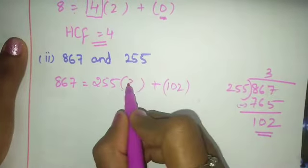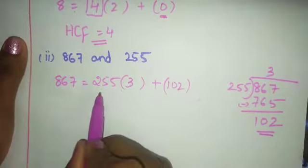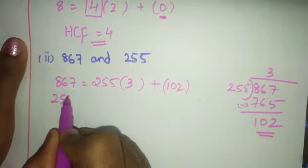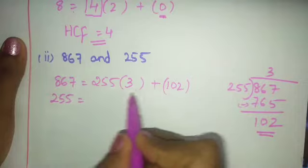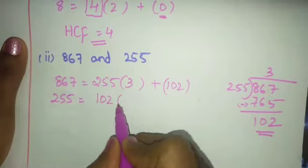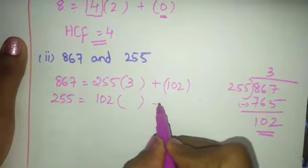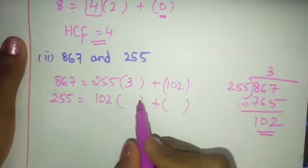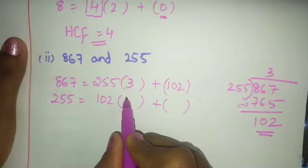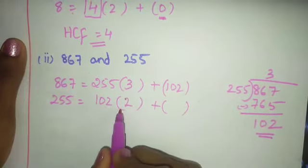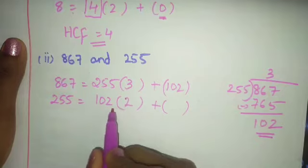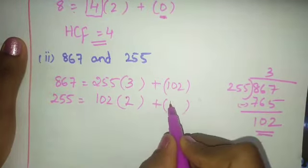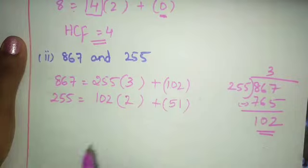Now take 255 = 102 × something + remainder. 102 × 2 is 204. 255 minus 204 gives remainder 51.